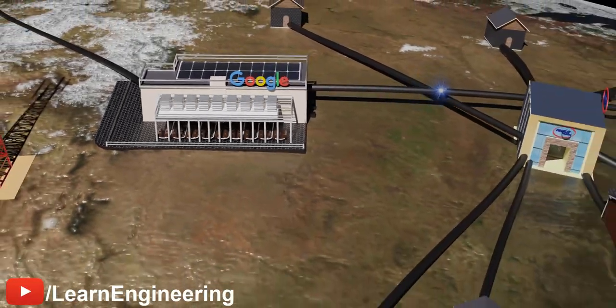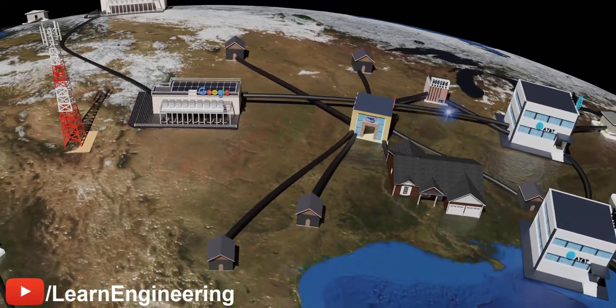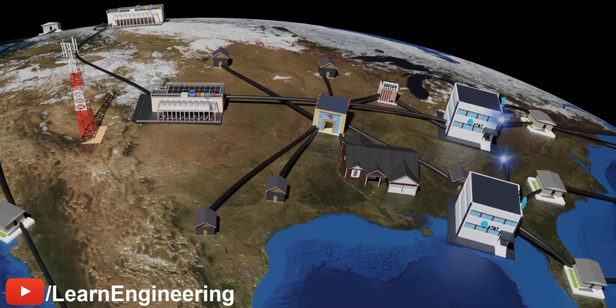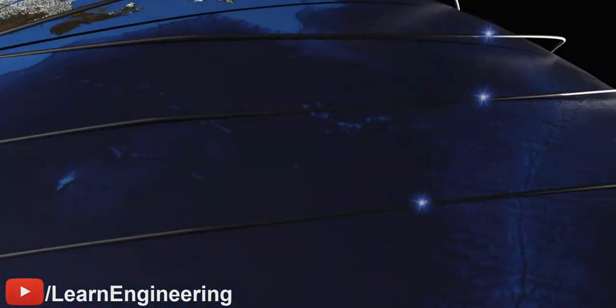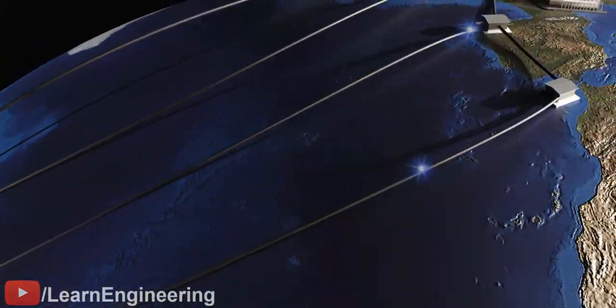The internet works through a massive global network of optical fiber cables. In this animation, you can see how data typically flows between the different levels of internet service providers in the modern internet.